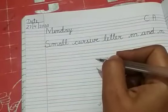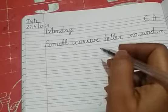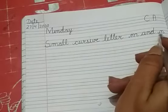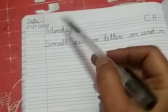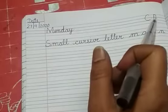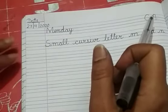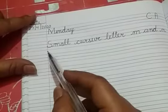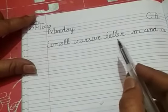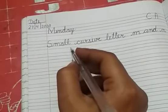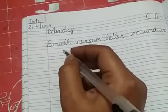Hello kids, today we are going to learn how to write small cursive letter M and N. Okay, first you have to mention date, day and C dot, A dot. And topic: small cursive letter M and N.